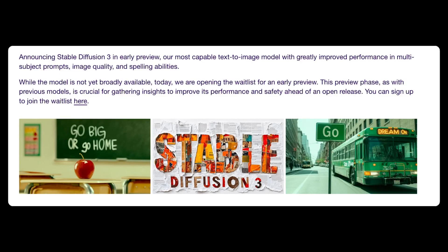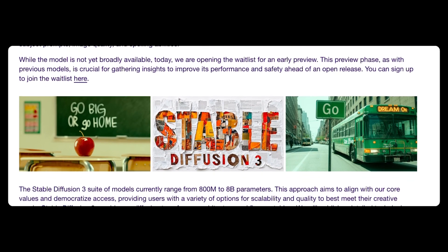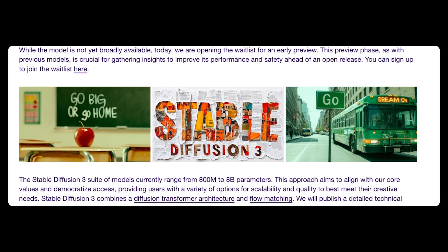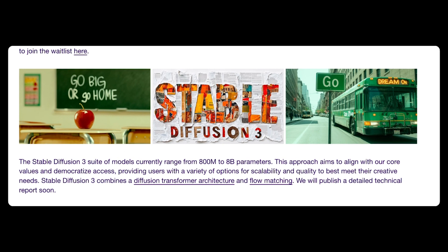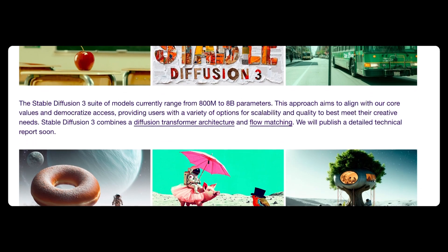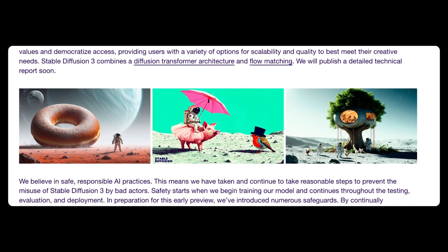Quoting VentureBeat, the new Stable Diffusion 3.0 model aims to provide improved image quality and better performance in generating images from multi-subject prompts. It will also provide significantly better typography than prior Stable Diffusion models, enabling more accurate and consistent spelling inside of generated images. Typography has also been an area of weakness for Stable Diffusion in the past, and one that rivals including DALL-E 3, Ideogram, and Midjourney have also been working on with recent releases.